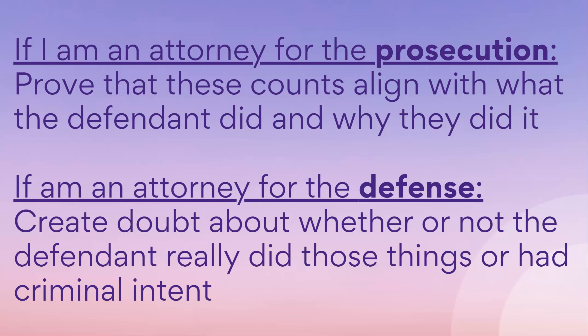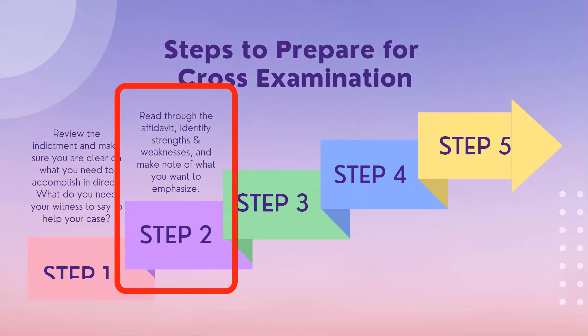Once you're clear on what you're trying to prove, move to the second step: go to the affidavit, which is the witness statement of the witness you'll be cross-examining. You need to know that document very well — understand the witness's strengths, what will play well with the jury and make them seem believable, as well as weaknesses in the affidavit that you could potentially exploit in cross-examination.